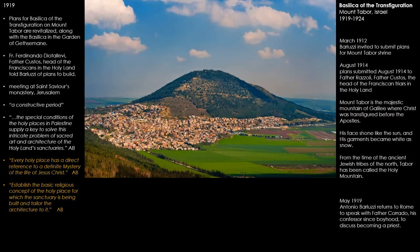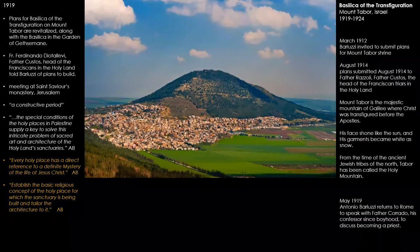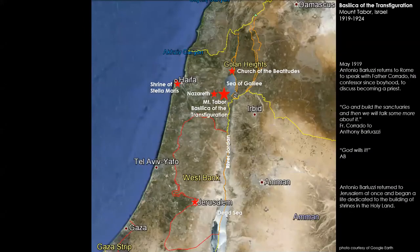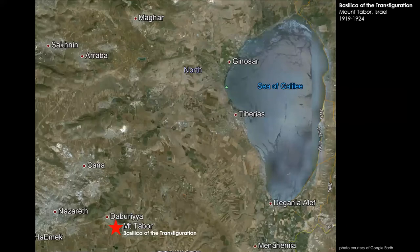Barluzzi returned one more time to Rome to talk about becoming a priest, but his confessor said his mission in life was really to carry on as an architect and build these holy places in the Holy Land. Mount Tabor is about 65 miles to the north of Jerusalem and not too far from the Sea of Galilee.